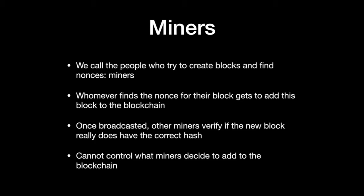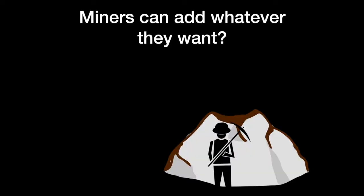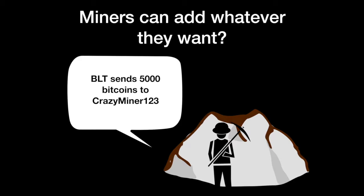This is the general way of adding data to a blockchain, and so far we cannot control what miners decide to add to the blockchain. So here's the problem: if miners can just add whatever they want, how do we apply this blockchain to cryptocurrency like Bitcoin? It would be disastrous if any miner could unilaterally decide to record something like 'BLT sent 5000 bitcoins to me' whenever they find the correct nonce for this piece of data.